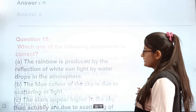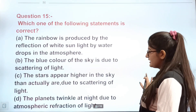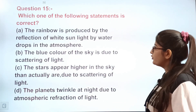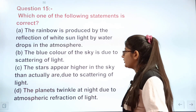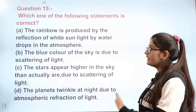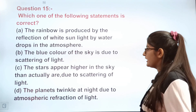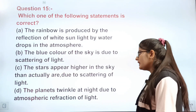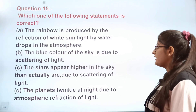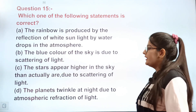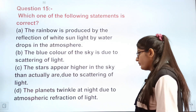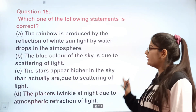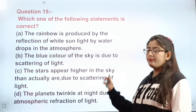Question 15: Which of the following statements is correct? A: Rainbow is produced by reflection of white sunlight by water droplets. B: The blue color of the sky is due to scattering of light. C: Stars appear higher due to scattering. D: Planets twinkle due to atmospheric refraction. The correct answer is B — only statement B is correct.